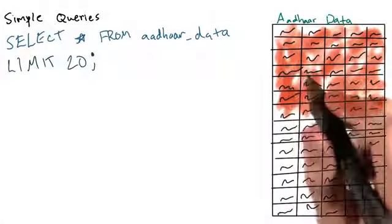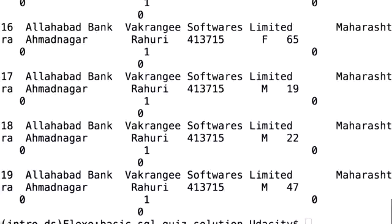If we ran this query, let's see what we get back. Oh great, the first 20 rows of the data. These are rows describing enrollments for the registrar Allahabad Bank, with various enrollment agencies, districts, age, genders, etc.